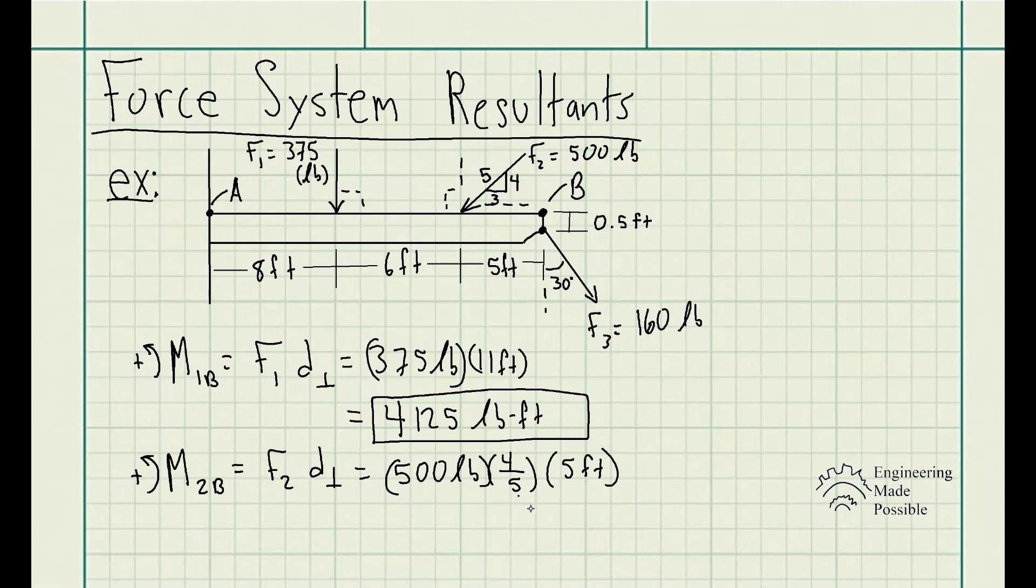If you used sine theta in this case, we can solve for the angle of theta, but you don't have to. We could just use the opposite over hypotenuse of 4 over 5 times the distance that's perpendicular, which is 5 feet, which gives us a moment of 2,000 pound feet.